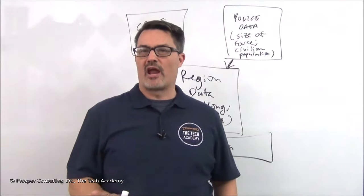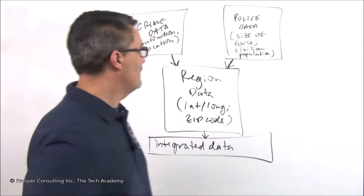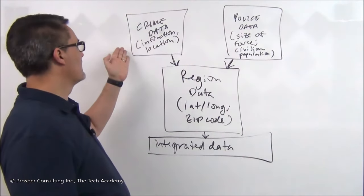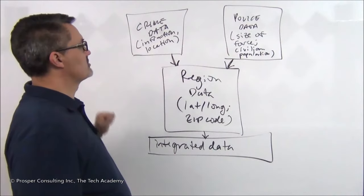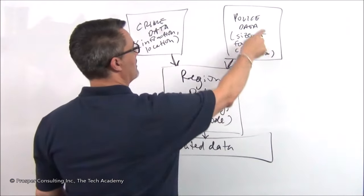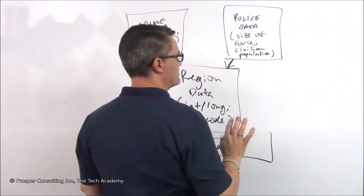Here's a rough diagram of the parts of a data analysis situation, as I just described. You would have data on crime, for example, a collection of data that included data about the infraction, whatever crime was committed, and the location of the actual incident. You'd also might have a separate collection of data about police, the size of the police force, size of civilian population.